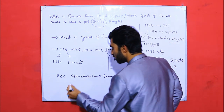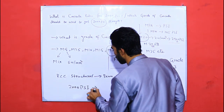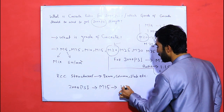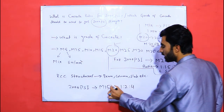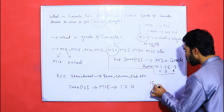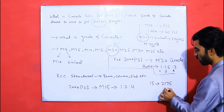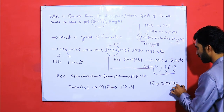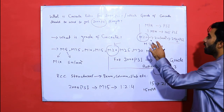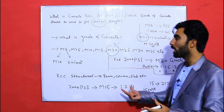For 2000 PSI strength, you can use M15 grade concrete. The ratio for M15 is 1:2:4. When you convert 15 MPa to PSI using the formula — 1 MPa equals 145 PSI — it becomes 2175 PSI. Using this unit conversion formula, you can determine the appropriate grade of concrete for any required PSI strength.